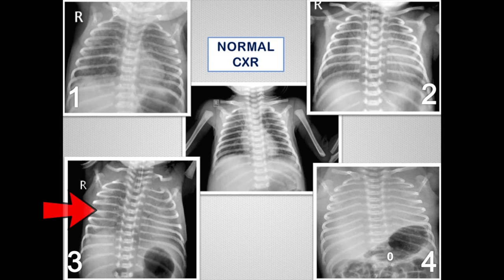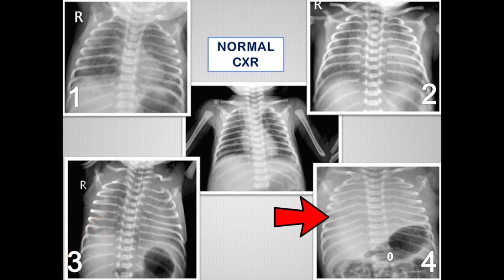Grade 3 findings are the same as Grade 2, but air bronchograms are also seen in the lateral part of the lungs, and cardiac and diaphragmatic margins are significantly obscured. Grade 4 shows almost completely opaque lungs with or without air bronchograms, and heart and diaphragmatic margins are not seen at all.